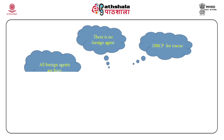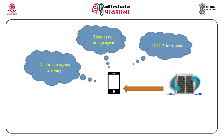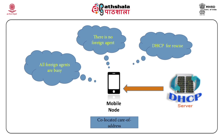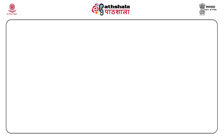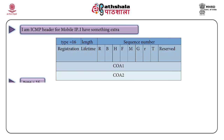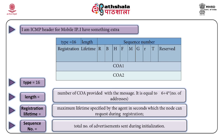Through agent advertisements and agent solicitations, the mobile node searches for the foreign agent. There can be a possibility that the mobile node enters a network where there are no foreign agents or all foreign agents are busy. In that case, the immediate rescue is DHCP — the mobile node acquires a temporary care of address for itself using DHCP and acts as its own foreign agent. However, this threatens the scarcity of IPv4 address space. The addresses acquired this way are known as co-located care of addresses.